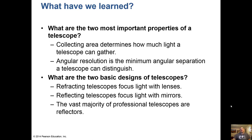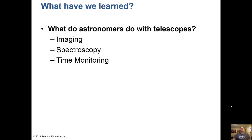To summarize: collecting area is much more important than magnification, and angular resolution is dependent on the size of the telescope. Refracting telescopes use lenses and reflecting telescopes use mirrors, and most professional telescopes are reflectors. With telescopes we do imaging, spectroscopy, and time monitoring.